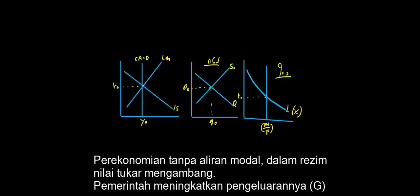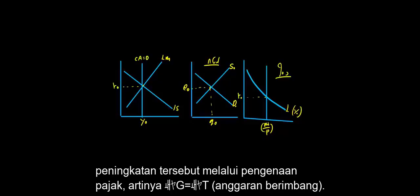An economy without capital movements, in a regime of exchange. The government increases its spending and finances the growth by imposing taxes — what is called delta G equals delta T, a balanced budget.